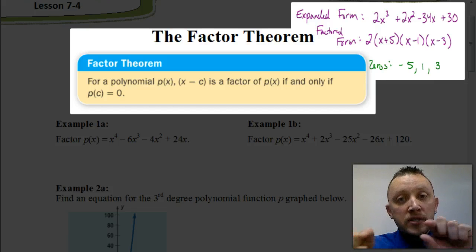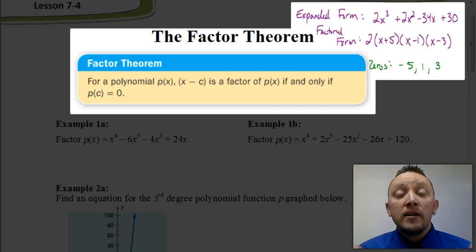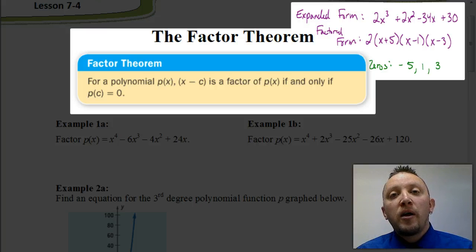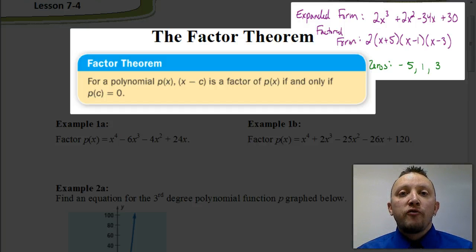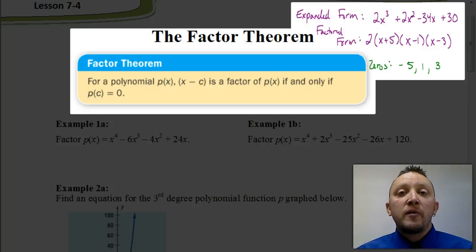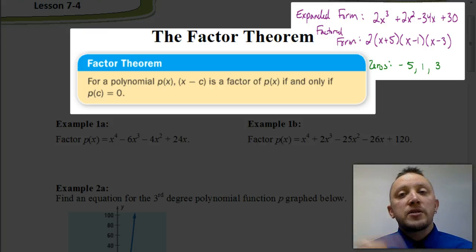Today we're going to start with the zeros and work our way up using the factor theorem. The factor theorem tells us that c is a zero of the polynomial when p(c) equals zero. If we know a number c is a zero, we can find the factors by taking x minus each of our c values. For example, if the zeros are negative 5, 1, and 3, the factors would be (x minus negative 5) = (x plus 5), then (x minus 1), and (x minus 3).